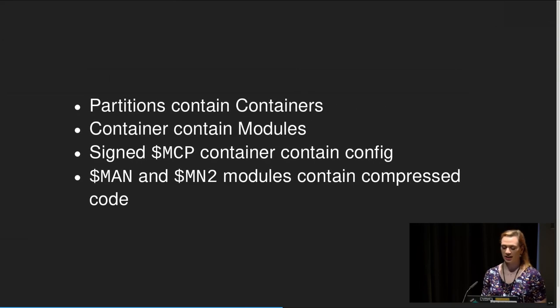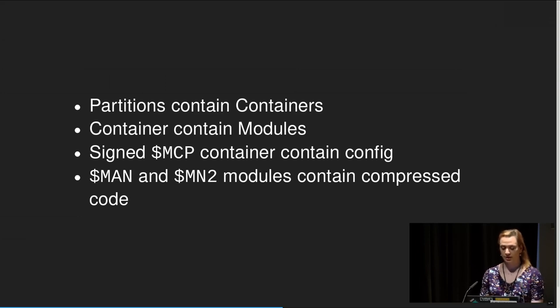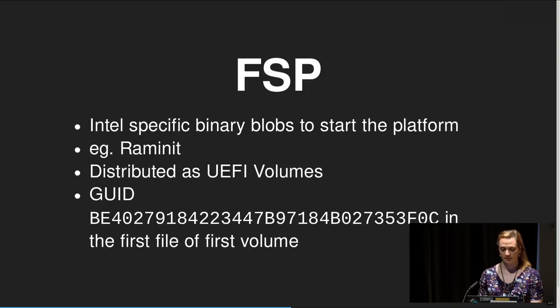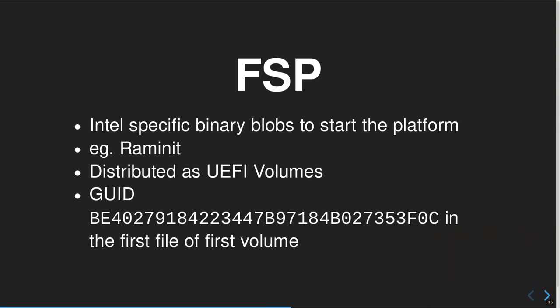A partition can contain containers, and a container can contain modules. The containers to look at starting with the MCP name are usually configuration containers: '$MRM', '$MAN', and '$MAN2'. Modules contain compressed code — usually Huffman encoded — which is too complex to cover here. Another thing you'll encounter with Intel images is the FSP — Intel Firmware Support Package. It's an Intel-specific binary blob used to start the platform: for example doing RAM init, initializing cache-as-RAM, and so on. It's distributed as three UEFI volumes and is easily recognizable by a very specific GUID in the first file.